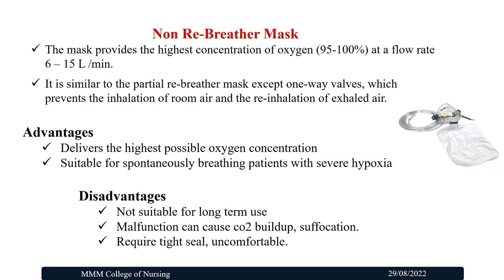The Non-Rebreather Mask provides the highest concentration of Oxygen — about 95–100% — at a flow rate of 6–15 litres per minute. It is similar to the Partial Rebreather Mask except for a one-way valve which prevents inhalation of room air and re-inhalation of exhaled air. Advantages: delivers the highest possible oxygen concentration and is suitable for spontaneously breathing patients with severe hypoxia. Disadvantages: not suitable for long-term usage, malfunctions can cause oxygen buildup and suffocation, requires a tight seal, and is uncomfortable for the child.